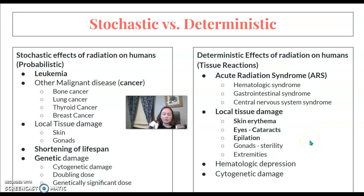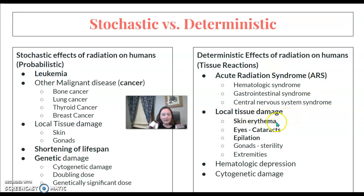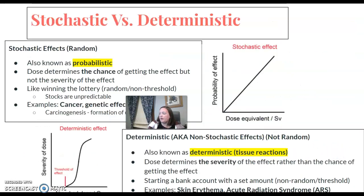Deterministic effects include your tissue reactions: the three types of acute radiation syndromes, local tissue damage such as skin reddening, cataracts in the eyes, epilation, and sterility of the gonads. Those are our main examples there.